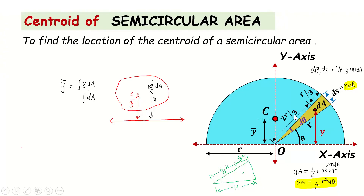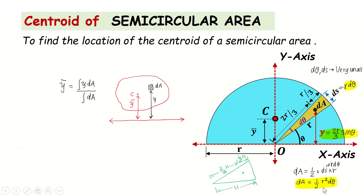So from the origin to the centroid of the sector, the distance is 2r/3. From this, we can find the value of y by simple geometry as y = (2r/3)·sinθ. This is very important. We now have sufficient information: y = (2r/3)·sinθ, and dA = (1/2)r²·dθ. We will substitute these values into the y-bar expression.